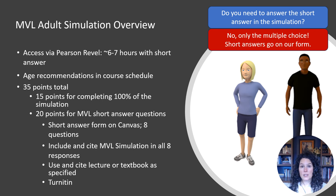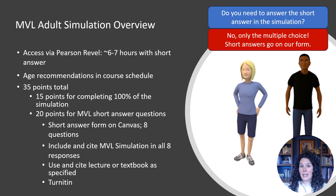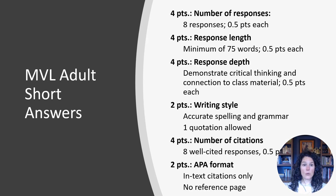We have age recommendations in the schedule, but again, we don't check progress until the deadline. It's a smaller assignment at 35 points total: 15 points for completing 100% of the simulation (prorated if you do less), and 20 points for completing the MVL short answer questions. Instead of 12 questions as in MVC, we only have 8. It's still a short answer form on Canvas. You'll cite the MVL simulation in all questions and use and cite lecture in as many questions as required, which is a lot.